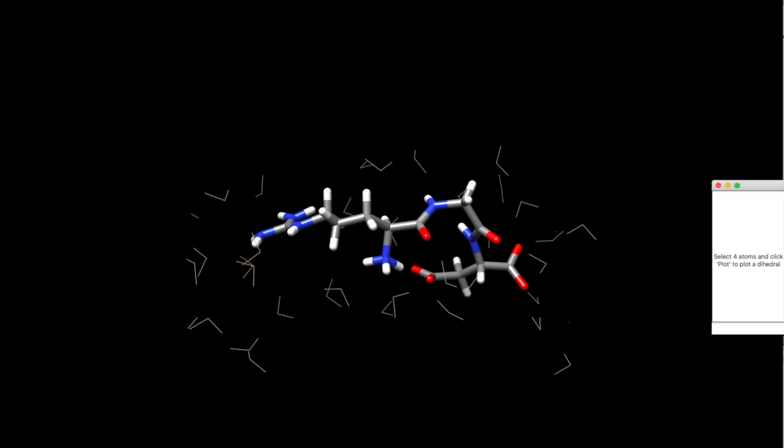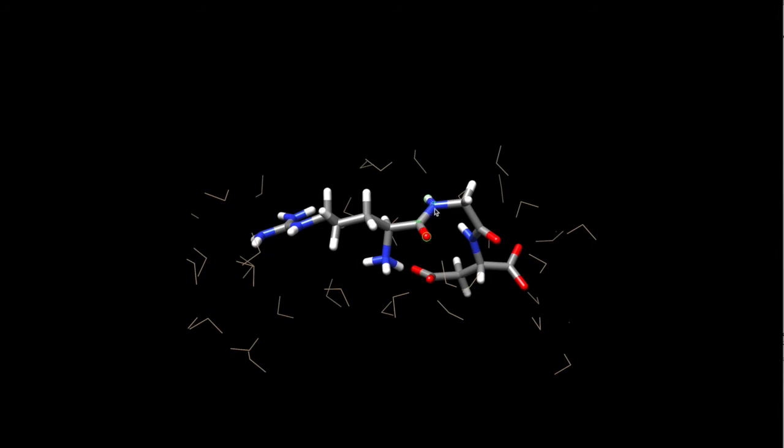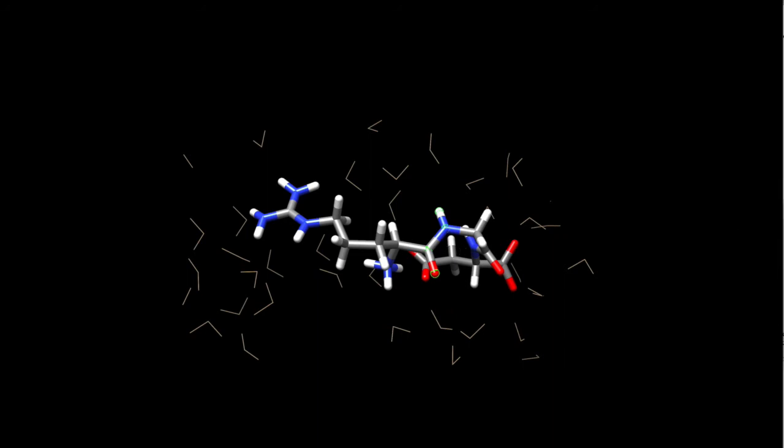All right, so I will select four atoms, one, two, three, and four. So this dihedral angle right here. I would like to see what was happening to that angle during simulation time. Once I have it selected, I will click on plot dihedral angles from the four selected atoms.